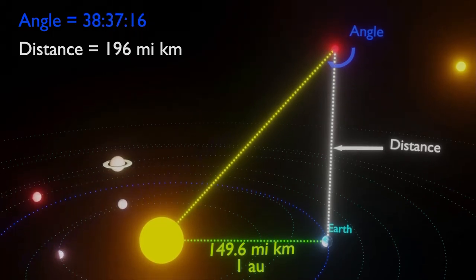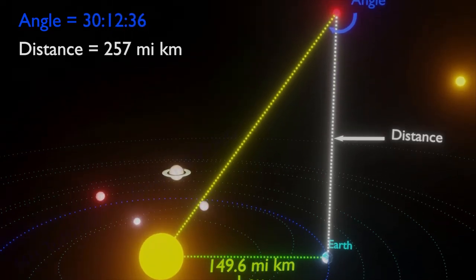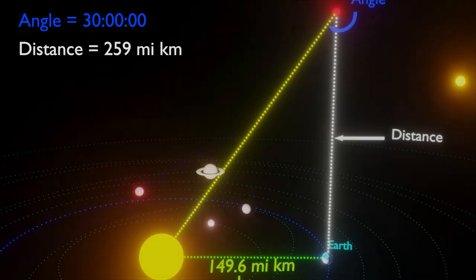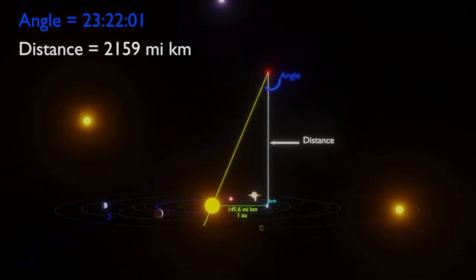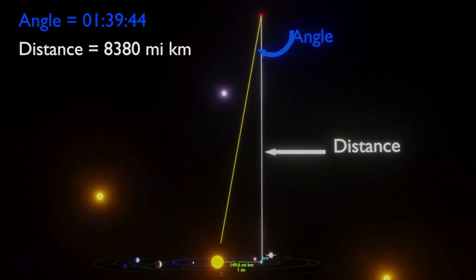At about 259 million kilometers, the angle is 30 degrees. Again, at 8.57 billion kilometers, the angle is just 1 degree.